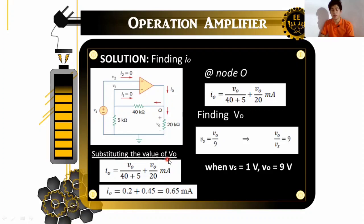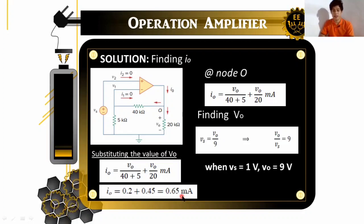Let's continue solving I sub O. Substituting the value of V sub O from our equation. So, I sub O is equals to 9 over 40 plus 5 plus 9 over 20. So, upon calculating this, we will get 0.2 plus 0.45. So, these are our results. And then, the final answer is 0.65 milliampere. So, this is our value of I sub O. So, this is one example on how we will solve problems with regards to our operational amplifier.